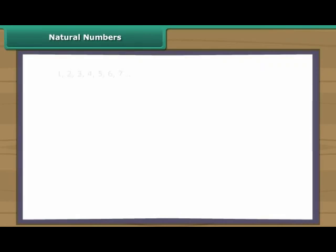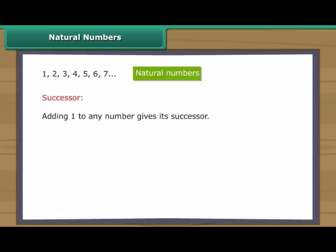Natural numbers. We use one, two, three, four to count the objects. Counting numbers are also known as natural numbers. Adding one to any number gives its successor. For example, one added to twenty gives twenty-one, which is the successor of twenty.